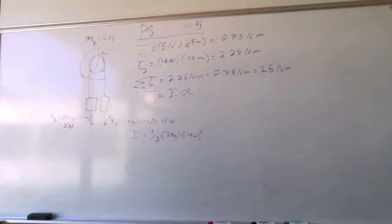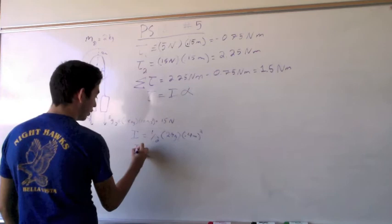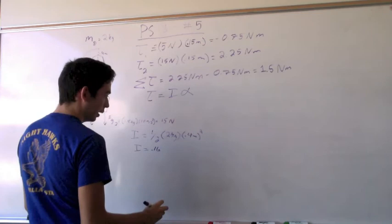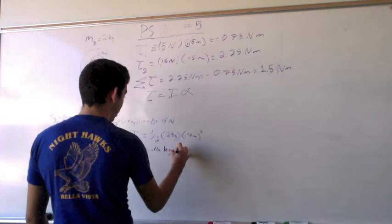What we can do is we can just plug this value in or we can solve for it. These two values will just cancel out. The moment of inertia is going to equal 0.16, that would be kilograms meters squared.